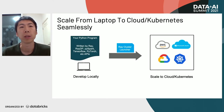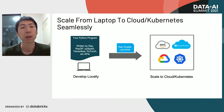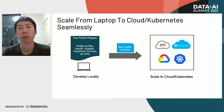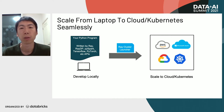A Ray program can easily scale from your laptop to cloud or a Kubernetes cluster seamlessly. You can start with a small dataset and develop the Ray program on your local laptop. Once ready, you can scale it to a Ray cluster. Ray provides a cluster launcher to launch a Ray cluster in a cloud or Kubernetes cluster. Ray also supports auto-scaling, so you can start with a small number of instances and scale with more nodes as your application requires more resources — all without any code change.